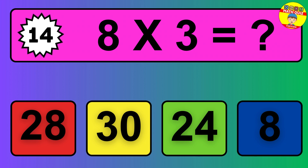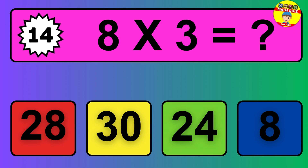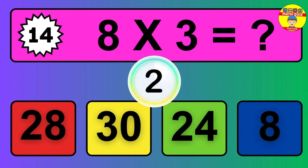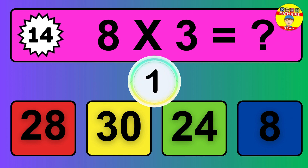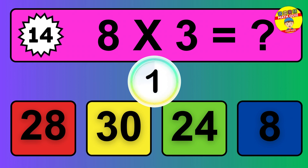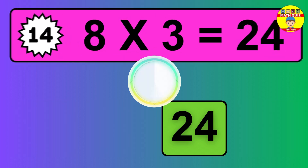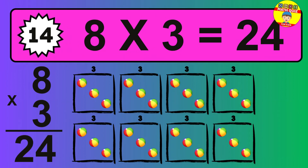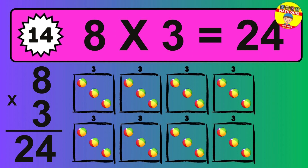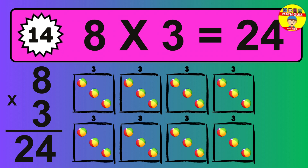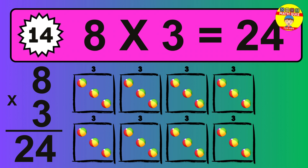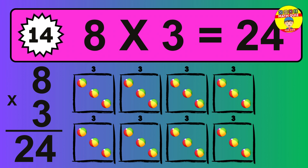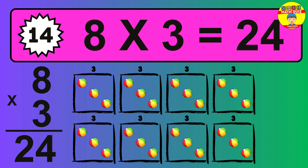Eight times three equals what? The answer is eight times three is twenty-four. To calculate, we have eight groups with three balls each one. So how many balls do we have? Twenty-four balls.